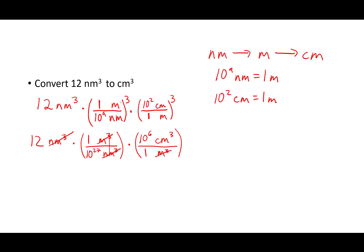So let's write out our number — I'll group all the numbers together. 12 times: in our numerator we have 10 to the 6, divided by 10 to the 27, and our units are centimeters cubed. That's going to be equal to — we should simplify these powers of 10 — it's going to be 12 times 10 to the 6 minus 27, centimeters cubed. Which is equal to 12 times 10 to the negative 21 centimeters cubed. I'm going to check with the calculator anyway — it is negative 21.